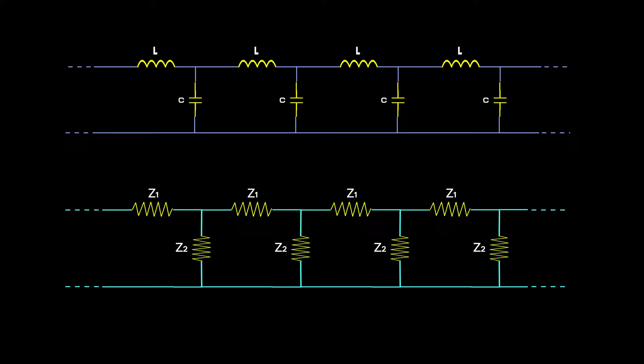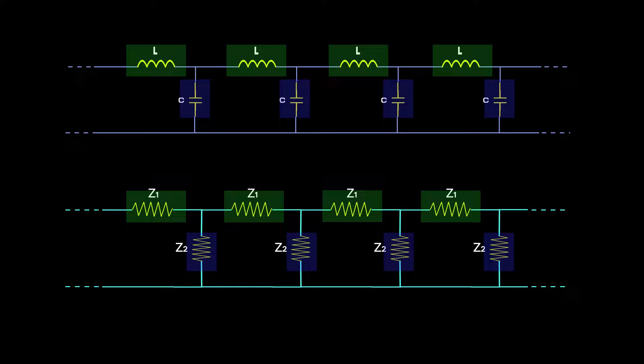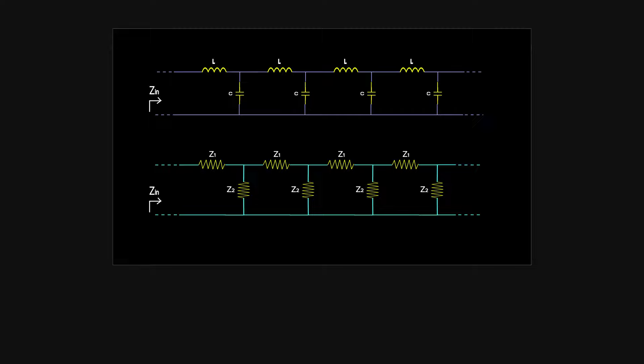This model is an infinite ladder network, with Z1 and Z2 being the impedances of inductors and capacitors respectively. Using the input impedance equation of the infinite ladder network, the input impedance of such a cable has that form. Since each section is only 1cm long, inductors and capacitors are too small and can be neglected, making the input impedance equal to the square root of L over C.